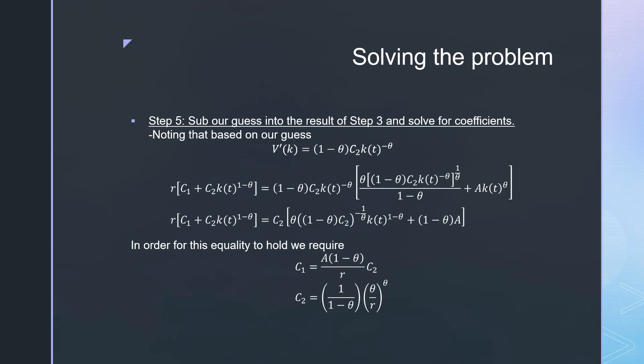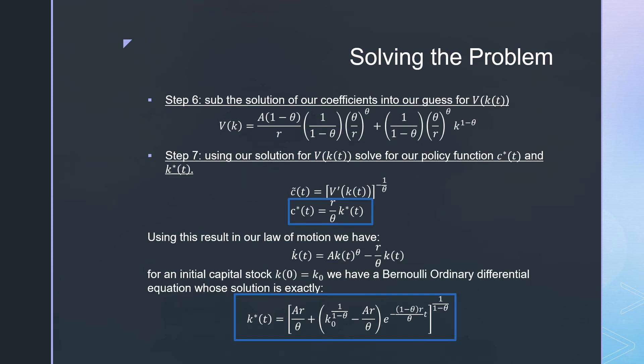Step six: sub our solution for our coefficients into our guess for what V(k,t) is. This is very important because we're going to take our derivative of this in step seven and solve for what our policy function is.